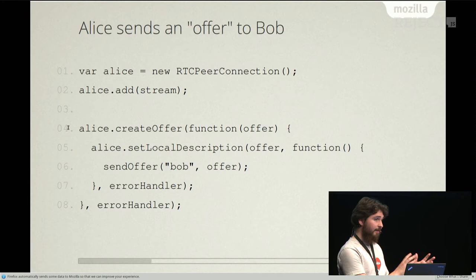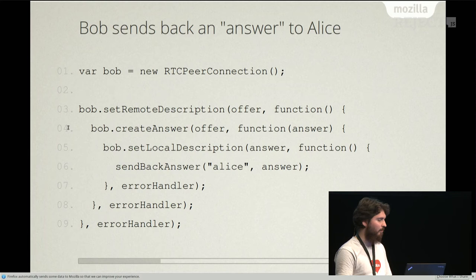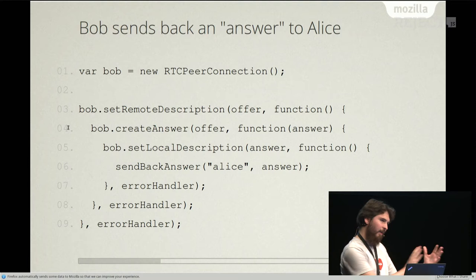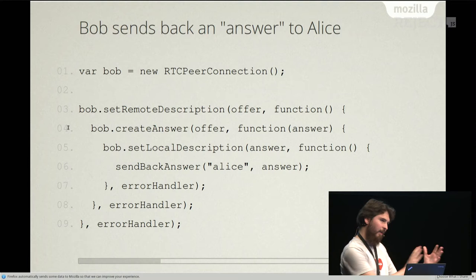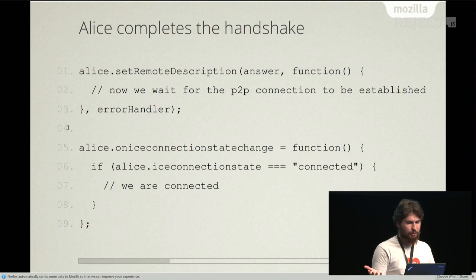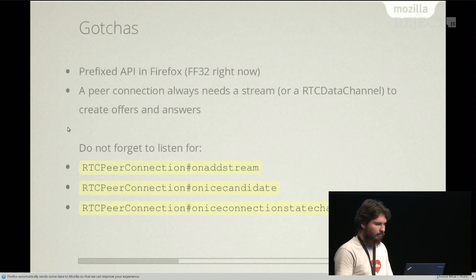That's Alice's side. On Bob's side, Bob creates his own peer connection, but this time he will set the remote description as the offer. So Alice's local description is the offer, and Bob's remote description is Alice's offer. He will create an answer out of the offer and send it back to Alice. Then we come back to Alice, and she will complete the handshake by setting her remote description as being the answer from Bob. Once you have that, you listen for the ICE connection state change callback to see when the connection is actually open and available.